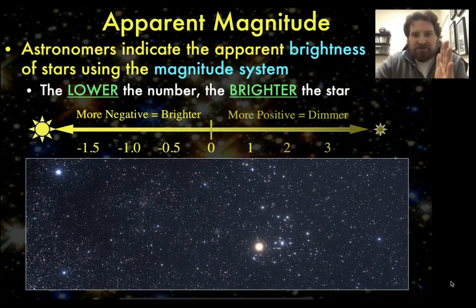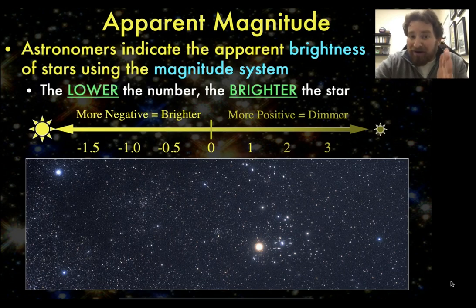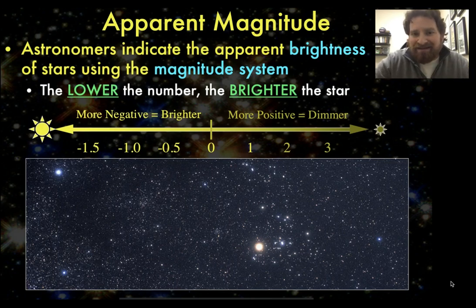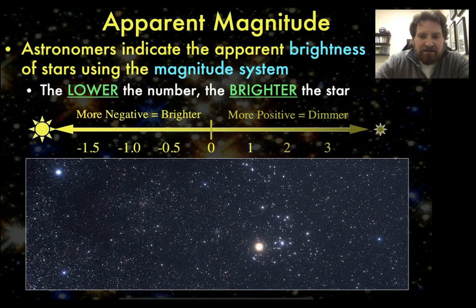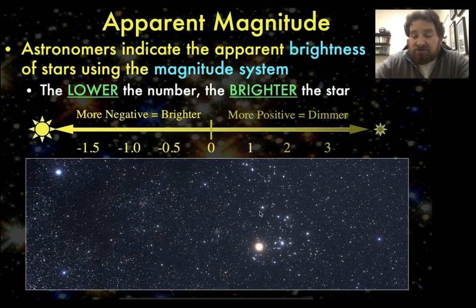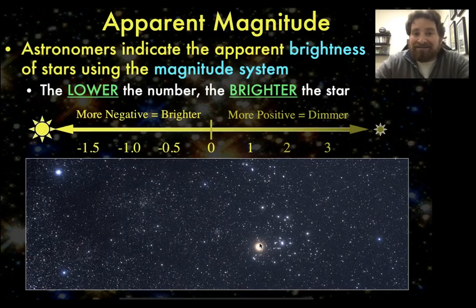Zero magnitude stars are not actually zero brightness. In fact, zero magnitude stars are pretty bright — they're among the brightest stars in the sky. The best way to understand this is just to see examples. So let's take a look at this constellation right before you. This is the constellation Taurus, and this big bright star is the star Aldebaran.